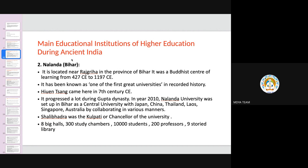Ancient Nalanda University was located near Rajgriha in Bihar province and was mainly a Buddhist center of learning from the 4th to 7th century CE up to around 1197 CE, the 12th century. It progressed a lot during the Gupta dynasty. In 2010, Nalanda University was re-established in Bihar as a central university with collaboration from Japan, China, Thailand, Laos, Singapore, and Australia.